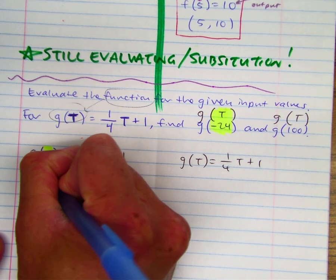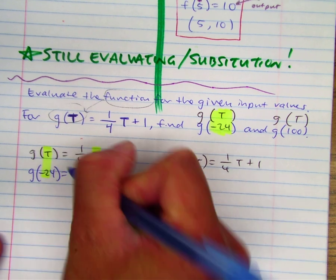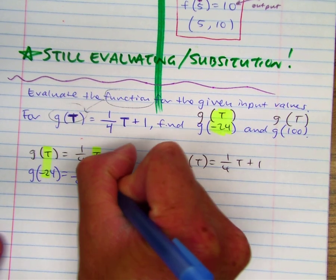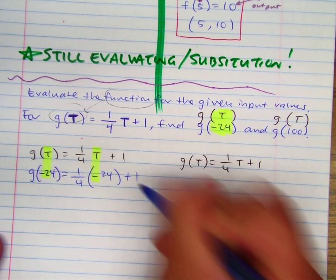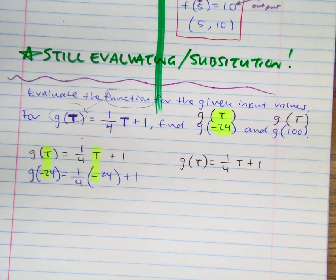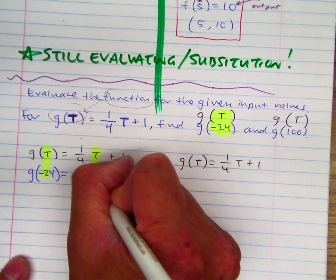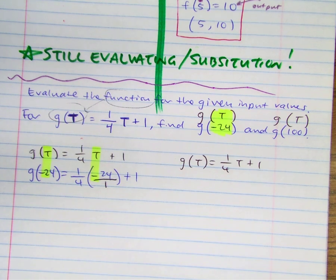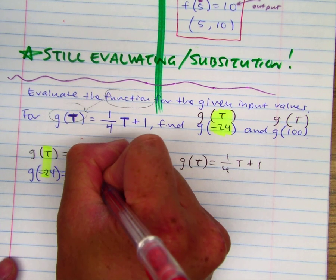g of negative twenty-four equals one-fourth times negative twenty-four plus one. I have a fraction times a whole number. How do I make that a fraction? Put a one under it, and then we're just going to multiply across.